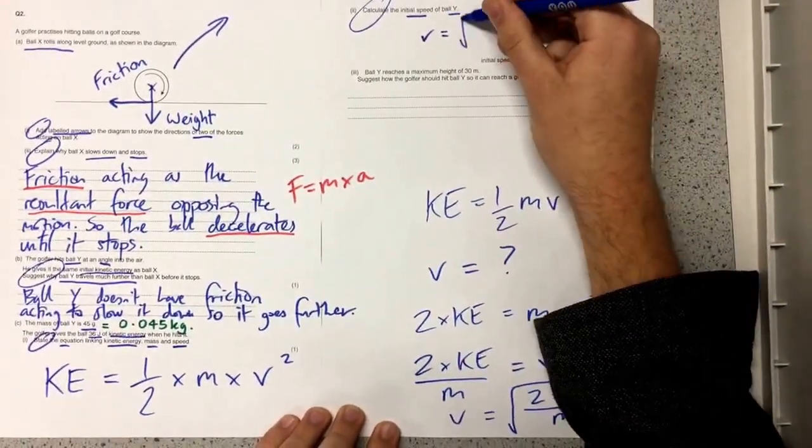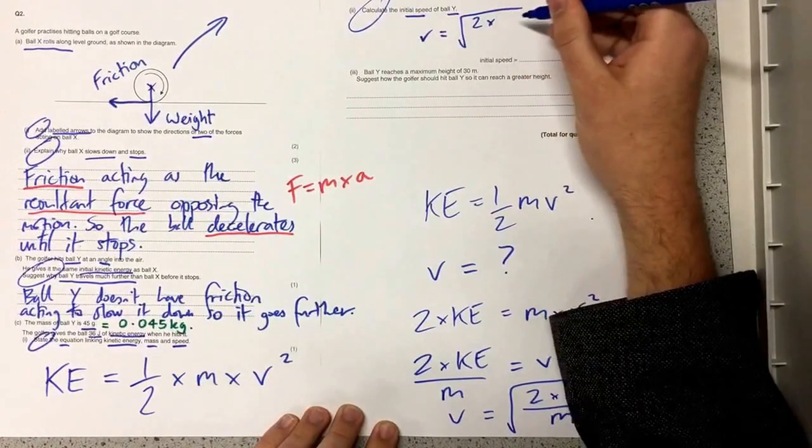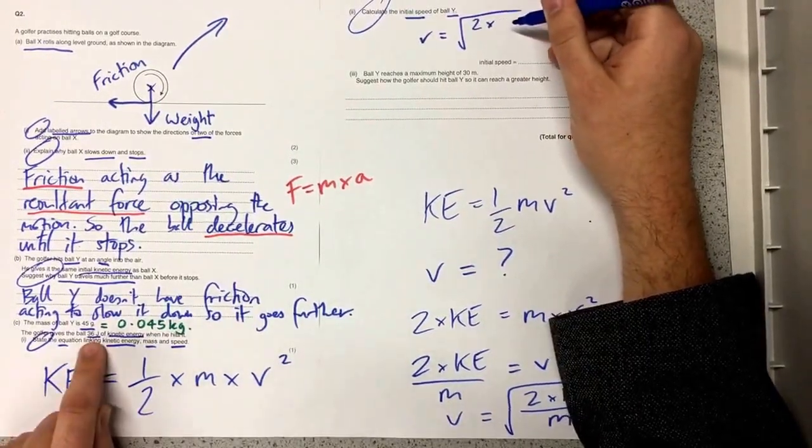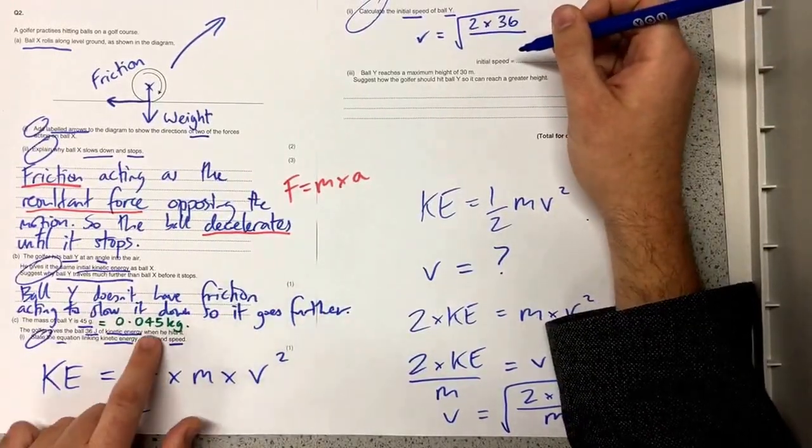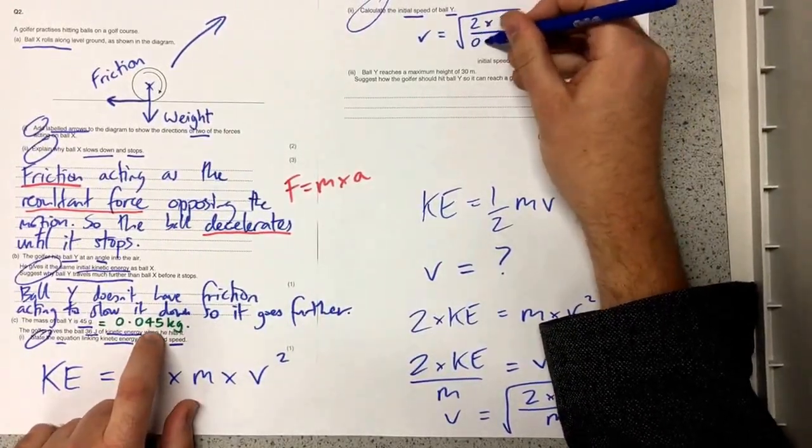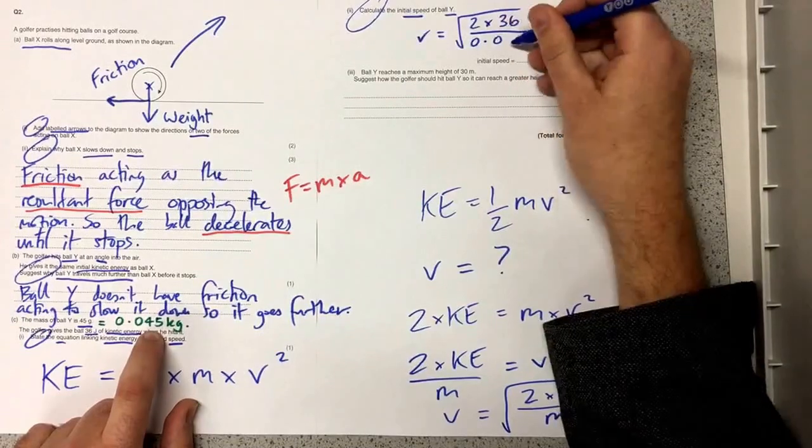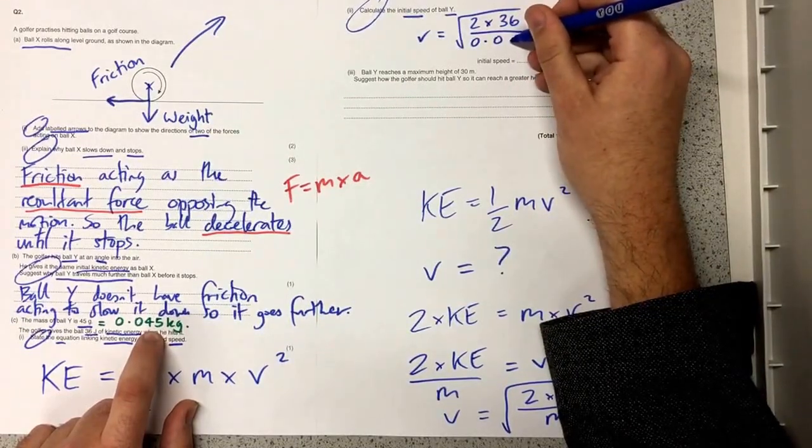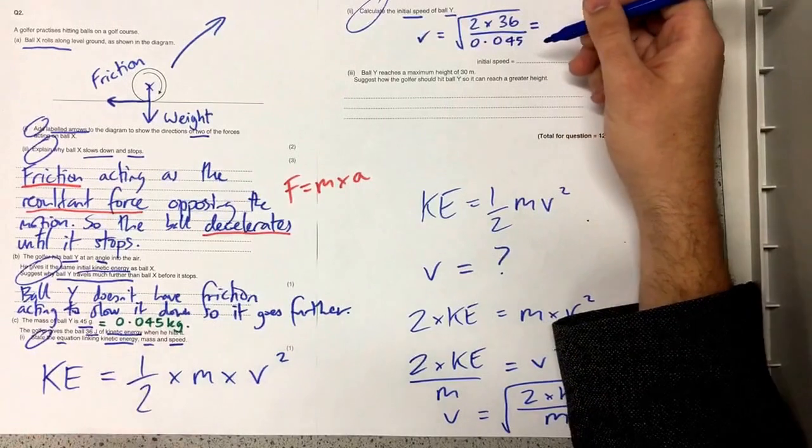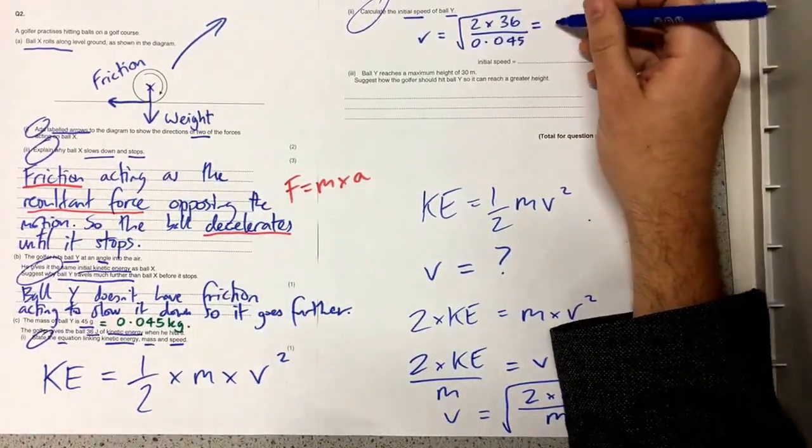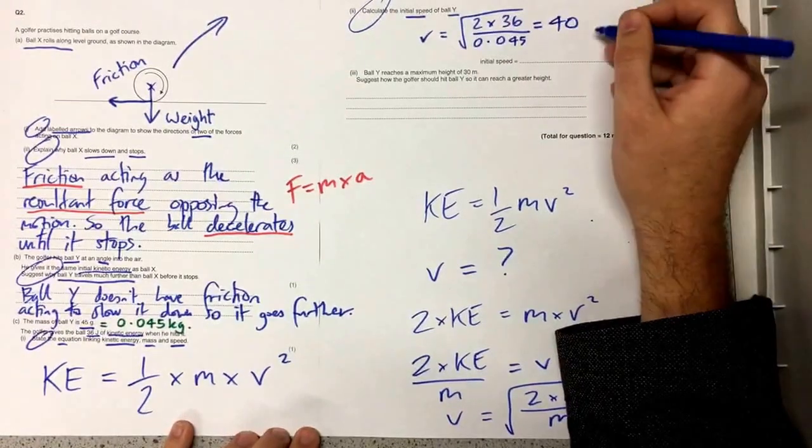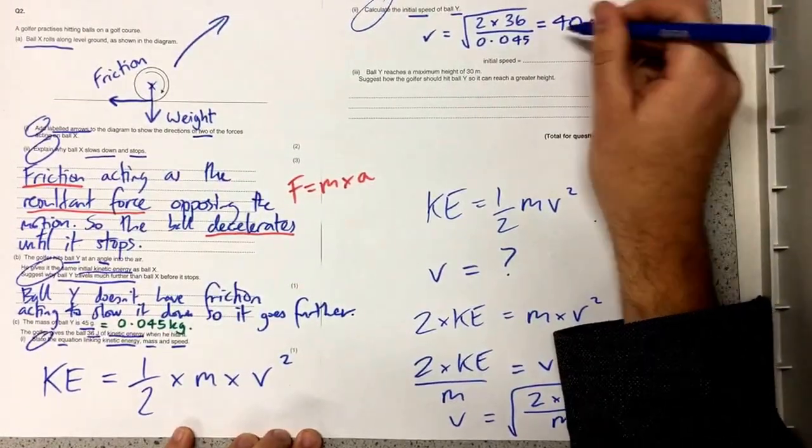So v equals the square root of 2 times the kinetic energy which was 36 joules divided by the mass remembering I've converted it into kilograms so that's 0.045 and I get out my calculator calculate all those numbers correctly and I'm going to get 40 meters per second.